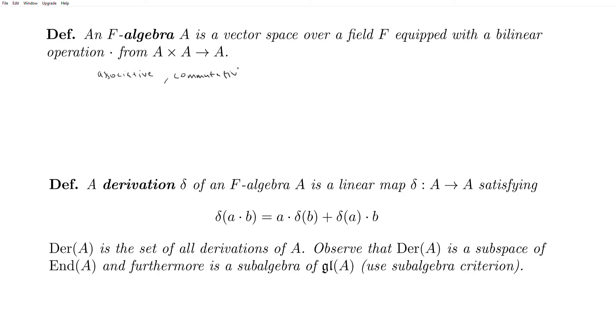And so immediate examples that come to mind are, one, End(V). So if A is equal to End(V), we can define the dot of any two things to be the composition of linear maps. And so this is certainly bilinear.